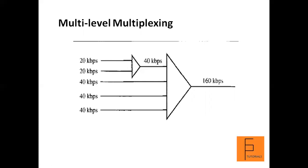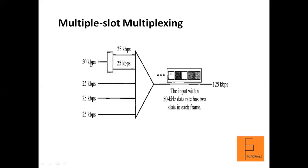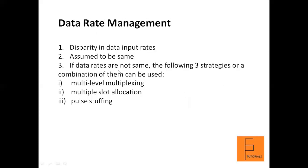The second strategy is multiple slot allocation. If one input line is 50 kbps and three others are 25 kbps each, you allocate two slots in the output frame for the 50 kbps line. The output frame would have five slots in total. By dividing the 50 kbps line into two 25 kbps slots, all five lines effectively operate at 25 kbps, allowing the multiplexing process to proceed.